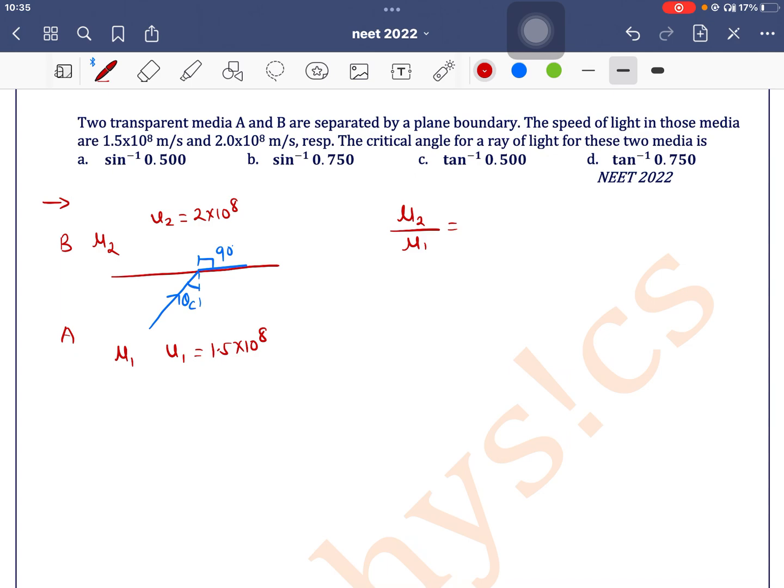That is μ₂/μ₁ equals v₁/v₂. v₁ is given as 1.5×10⁸, v₂ is 2×10⁸, so this equals 3/4. Now if we apply Snell's law here...